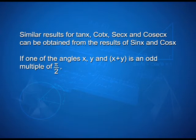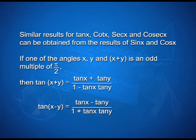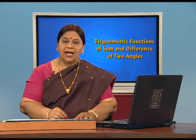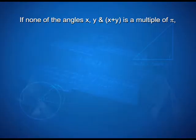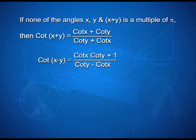If none of the angles x, y, and x+y is an odd multiple of π/2, then tan(x+y) = (tan x + tan y) / (1 − tan x·tan y). Similarly, tan(x−y) = (tan x − tan y) / (1 + tan x·tan y). If none of the angles x, y, and x+y is a multiple of π, then cot(x+y) = (cot x·cot y − 1) / (cot y + cot x). Similarly, cot(x−y) = (cot x·cot y + 1) / (cot y − cot x).